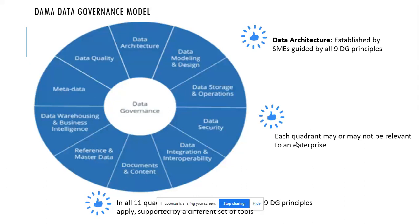There are multiple facets of data, and today we will present what is called the DAMA data governance model. DAMA is a well-known industry body which provides regulations and methodologies for how data should be managed. It looks like a pie where there are 11 quadrants and 9 data governance principles. Every quadrant might not be applicable for each and every industry. As the industry matures, they start embracing the quadrants they need as per their requirements.